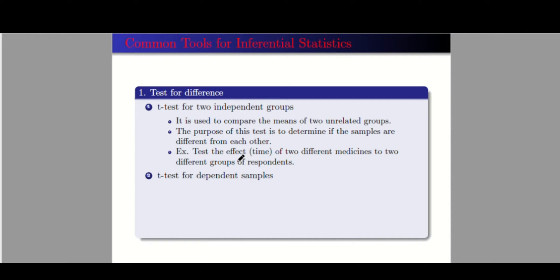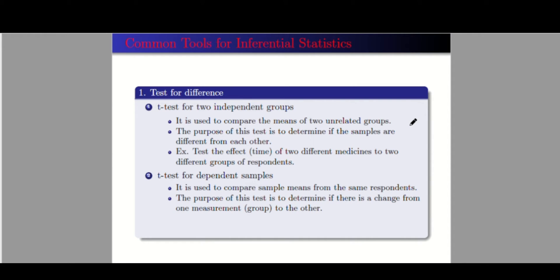The t-test for dependent samples is used to compare sample means from the same respondents — only one group of respondents. The purpose is to determine if there is a change from one measurement to another, such as before-and-after comparisons or pre-test and post-test in a classroom setting. For two independent groups we compare results between two groups; for dependent samples there is only one group but we compare before and after results. We also have the F-test or ANOVA if you want to compare variances.